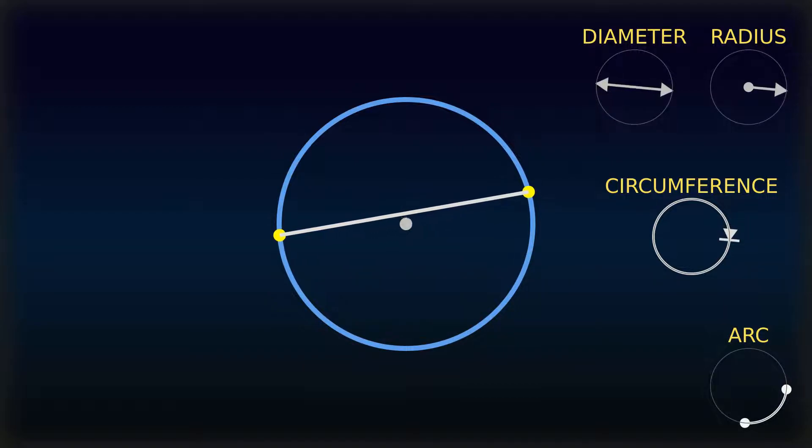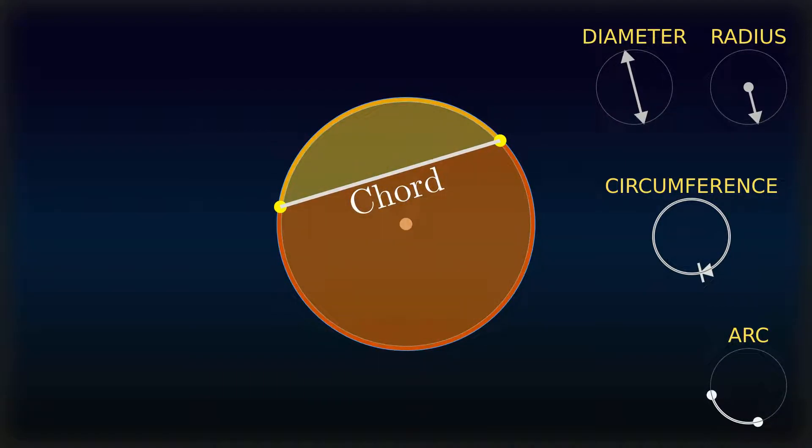A chord is a line segment whose endpoints lie on the circle, thus dividing a circle into two segments.